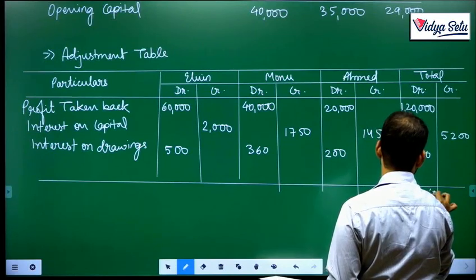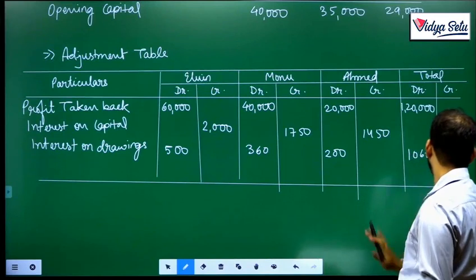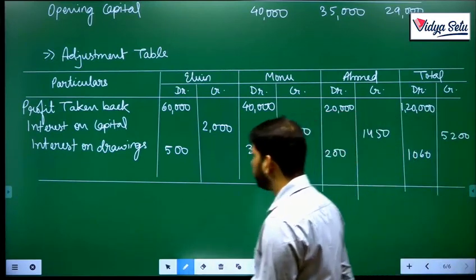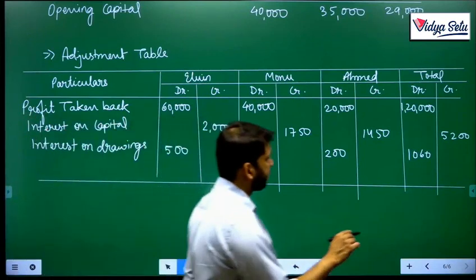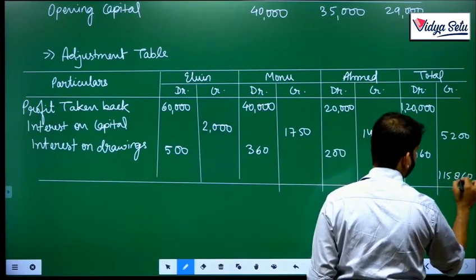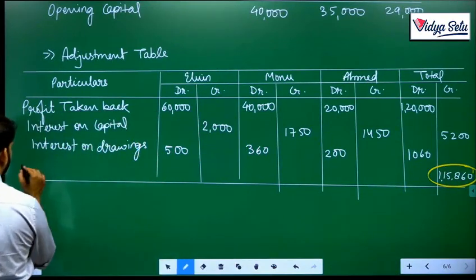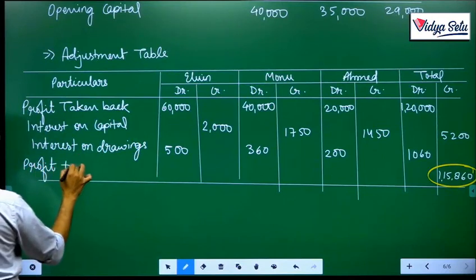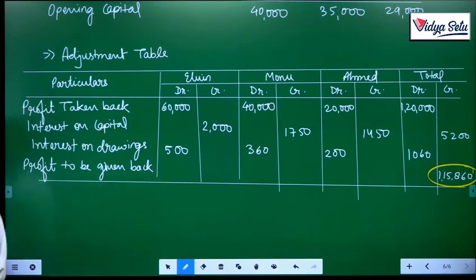We will see here the total is 1,21,060. Here only 5,200, so whatever is the difference we will have to write down. 1,15,860, and this is the extra money which was remaining in our hands - profit to be given back. This 1,15,860 will be given back in which ratio? In 3:2:1. 3 plus 2 is 5, plus 1 is 6.